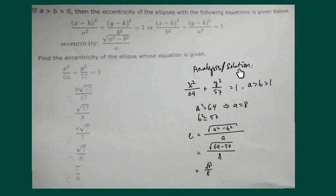So here's the solution and analysis. A squared is 64 because we need to require A is bigger than B. If it's 64, it's bigger than 57, so A is 8. Substituting back in there, we can see it's a straightforward calculation. The final answer is square root of 7 over 8.